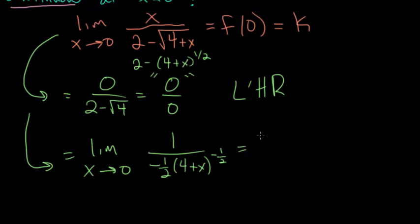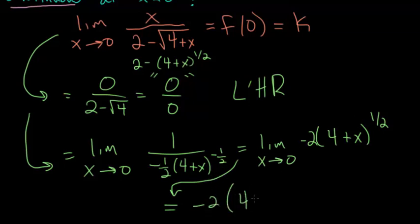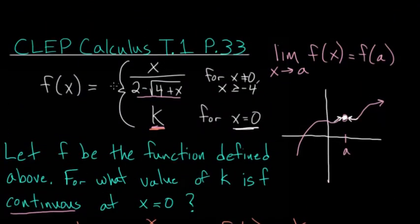Rearranging, the limit as x approaches 0 becomes 1 divided by the expression with minus 1/2 in the denominator. Moving minus 1/2 to the numerator gives minus 2 times (4 plus x) to the 1/2 power. Plugging in x equals 0: minus 2 times the square root of 4, which is minus 2 times 2, equal to minus 4. Since this limit equals k, k must equal negative 4.